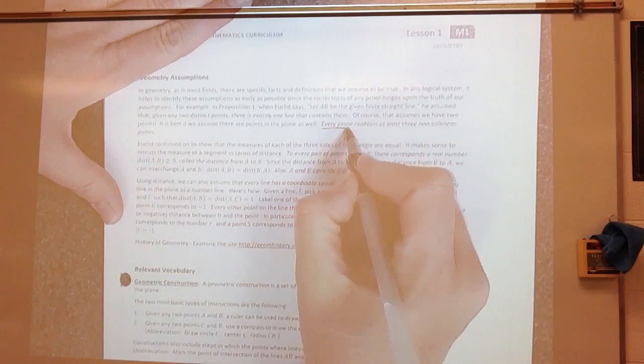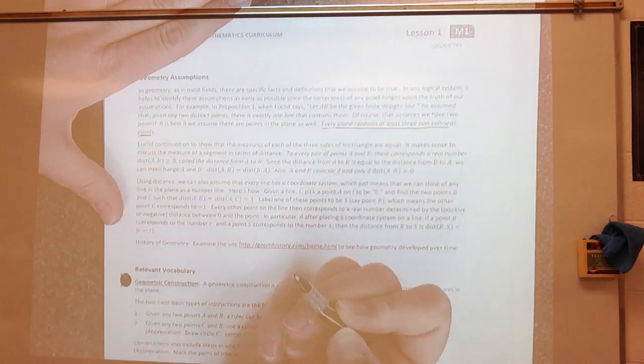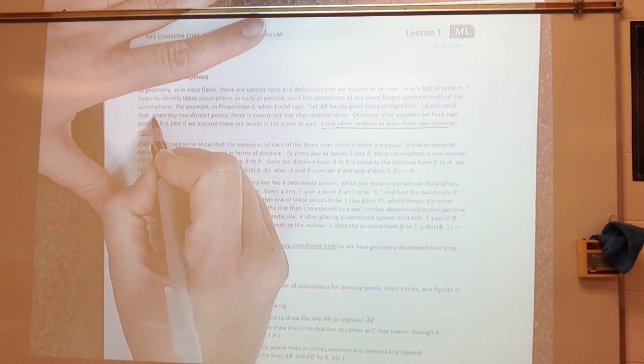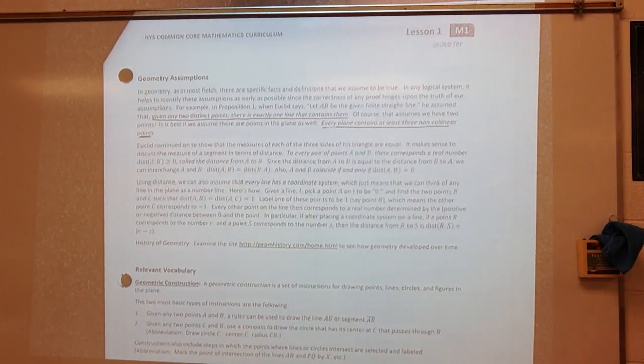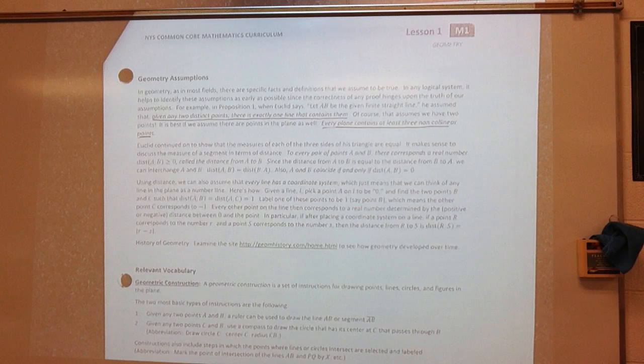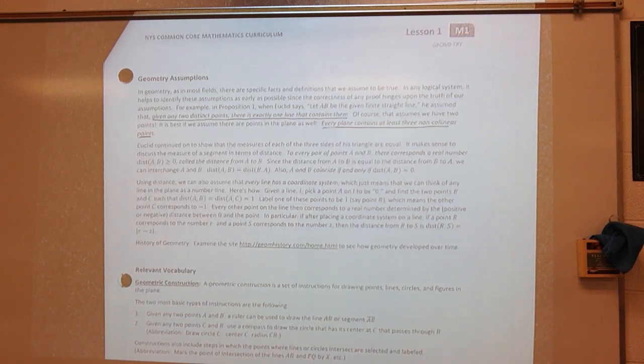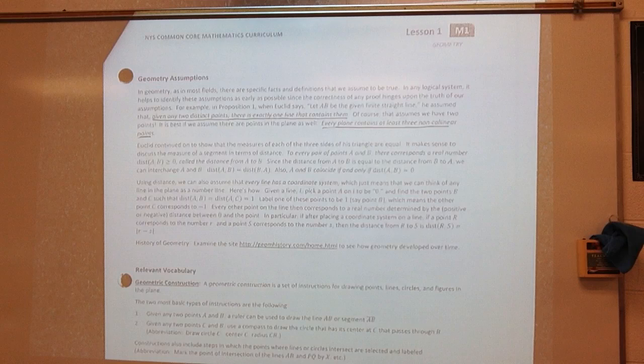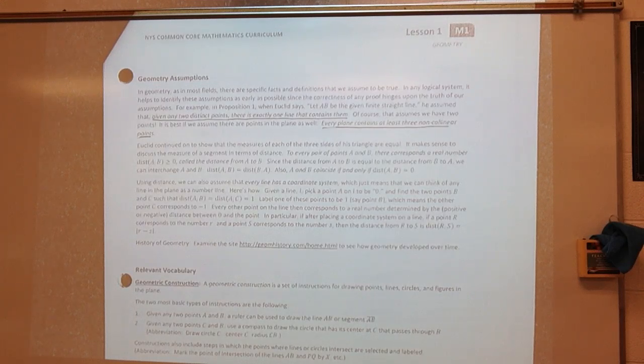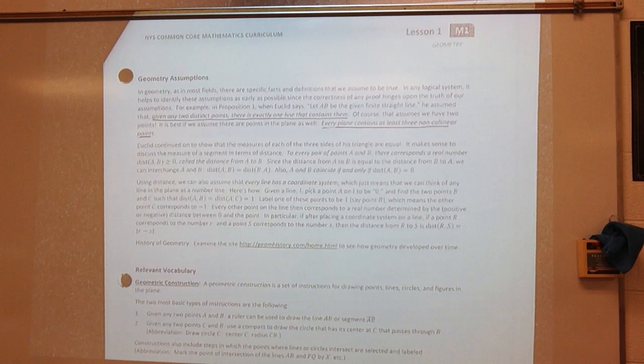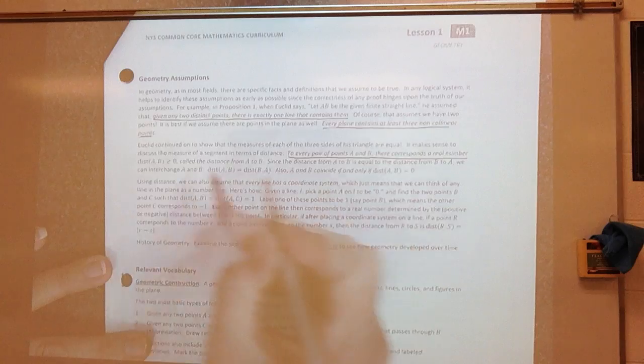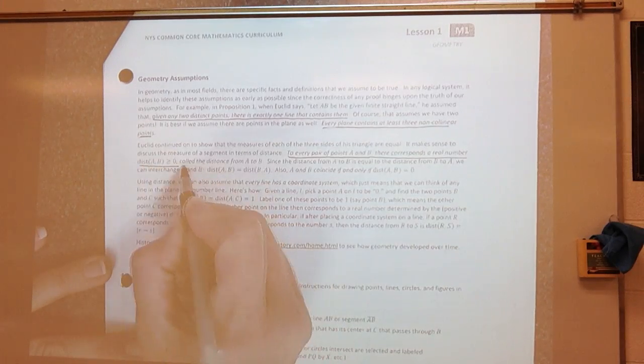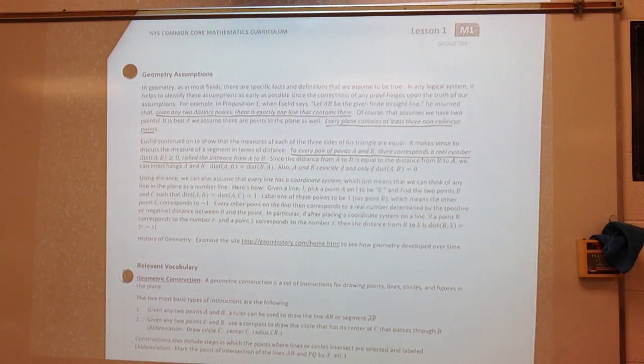All right? So, guys, here's some pretty important information. All right? Given any two distinct points, there's exactly one line that contains them. That's another part of pretty important information. Euclid continued on to show that the measure of each of these three sides of his triangle are equal. It makes sense to discuss the measure of a segment in terms of distance. To every pair of points, A and B, there corresponds a real number distance called the distance from A to B. All right? So, when I have two points, then when I have those two points, it tells me that there's going to be a distance. I can measure some sort of distance that has to be greater than or equal to zero. And we call that the distance from A to B.